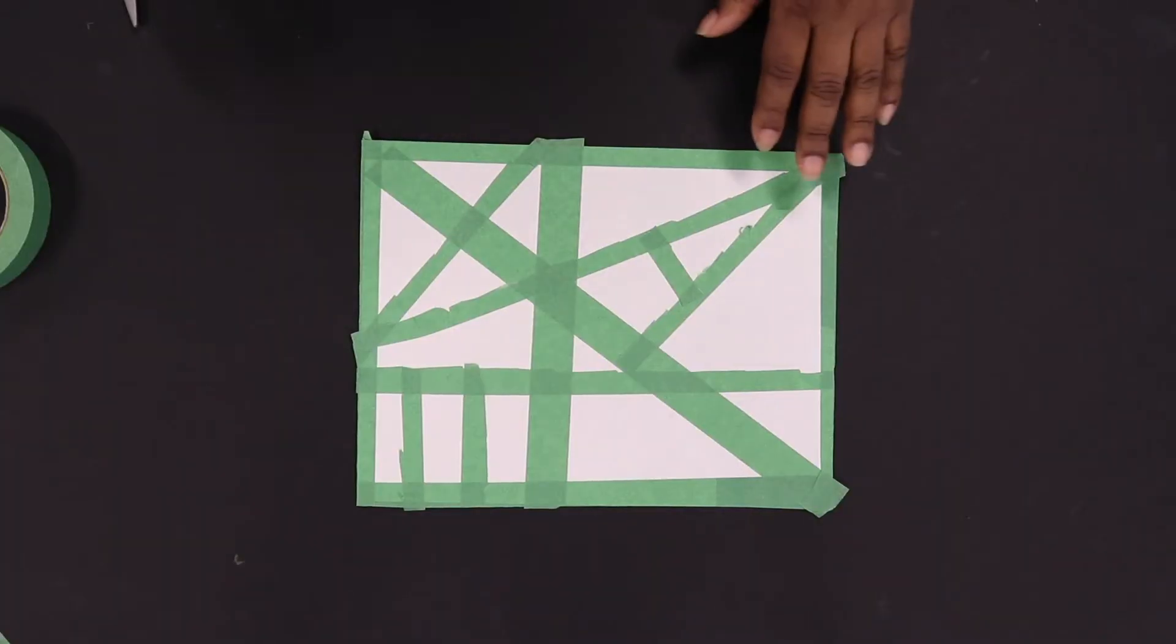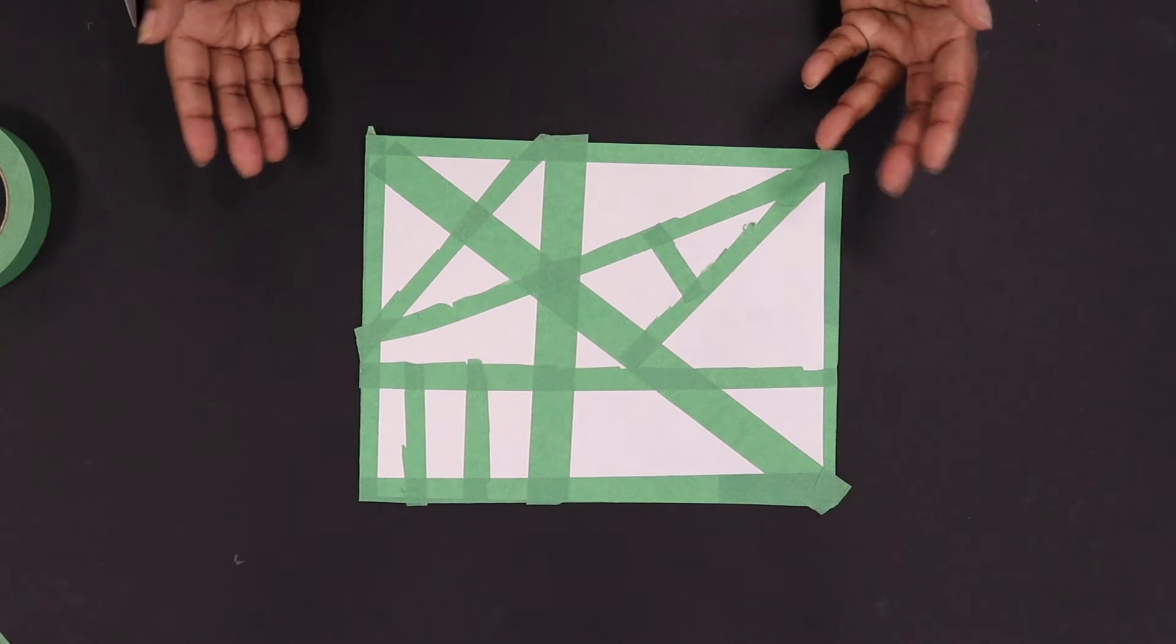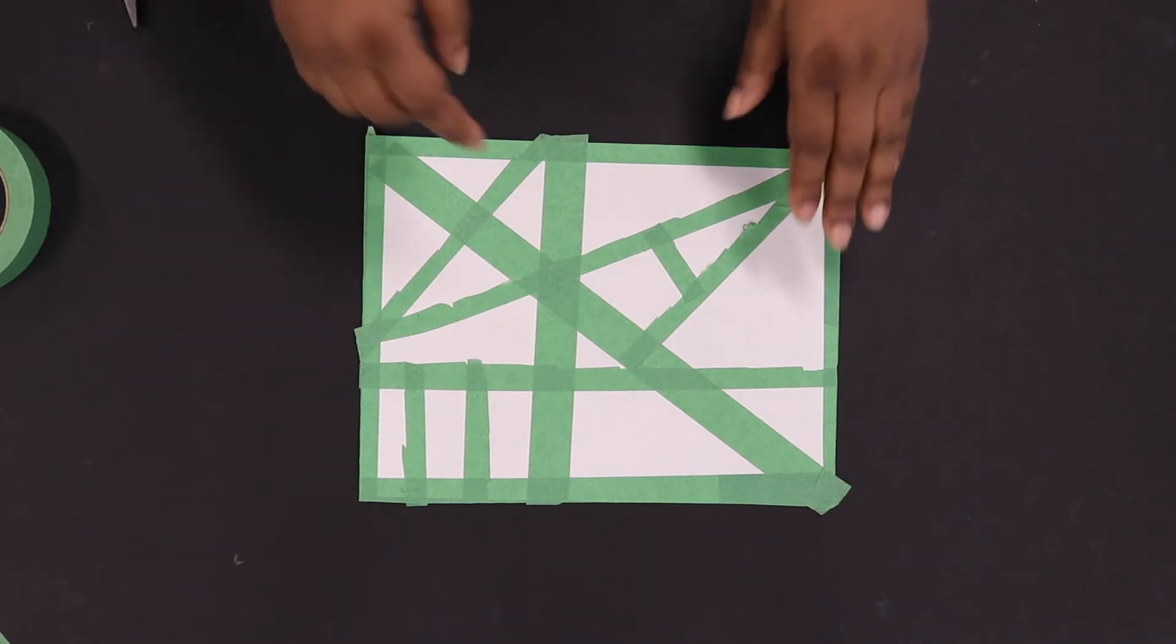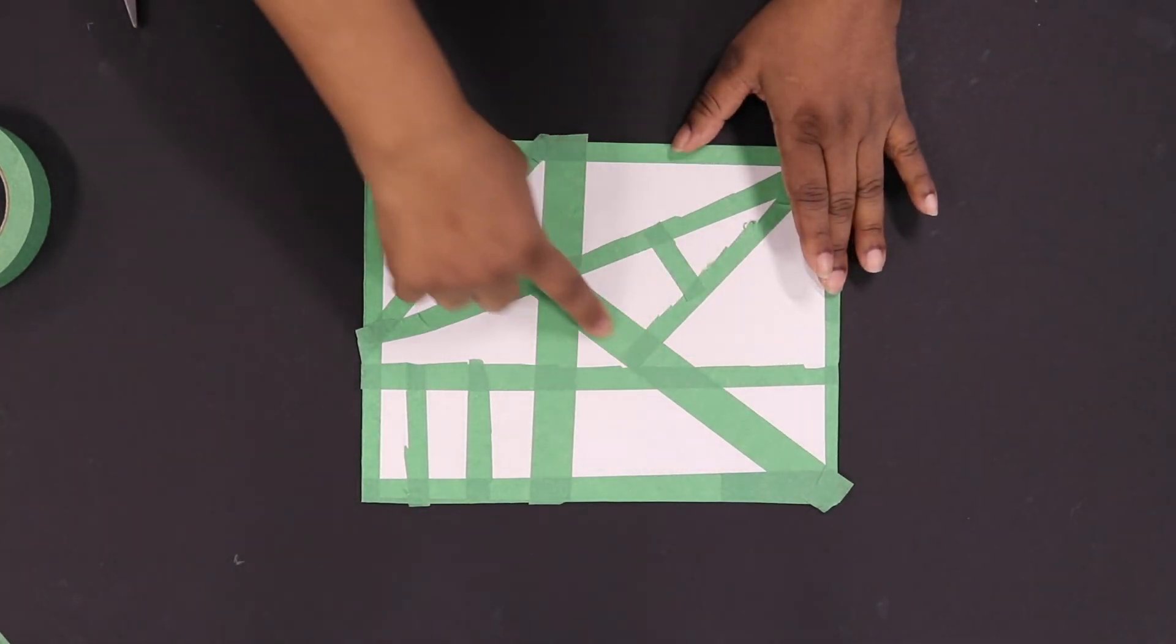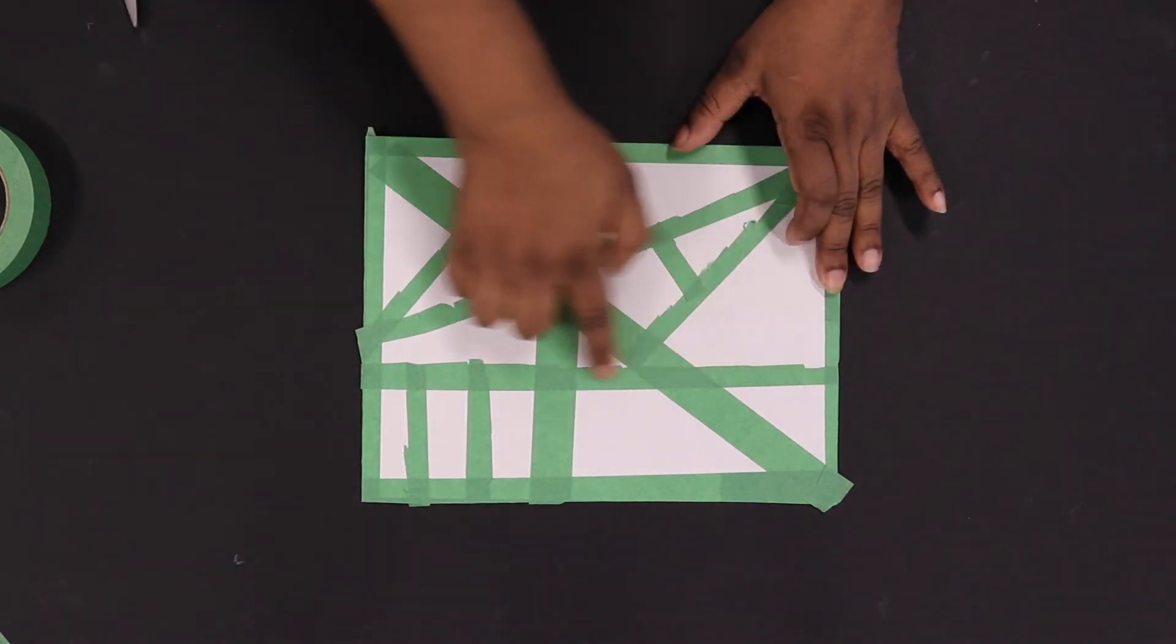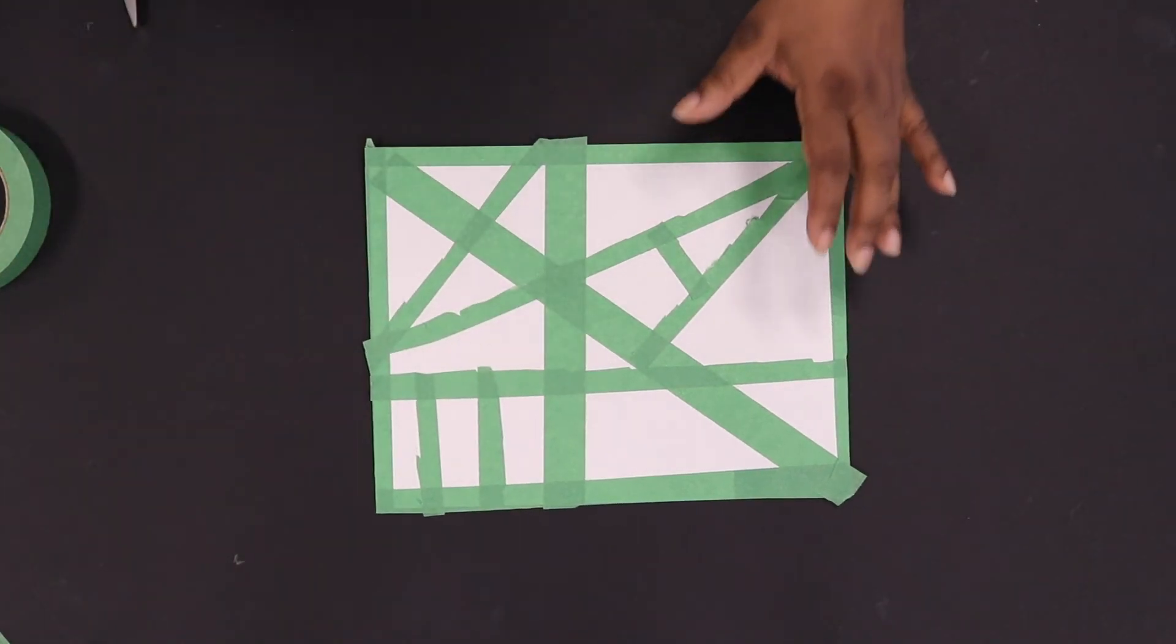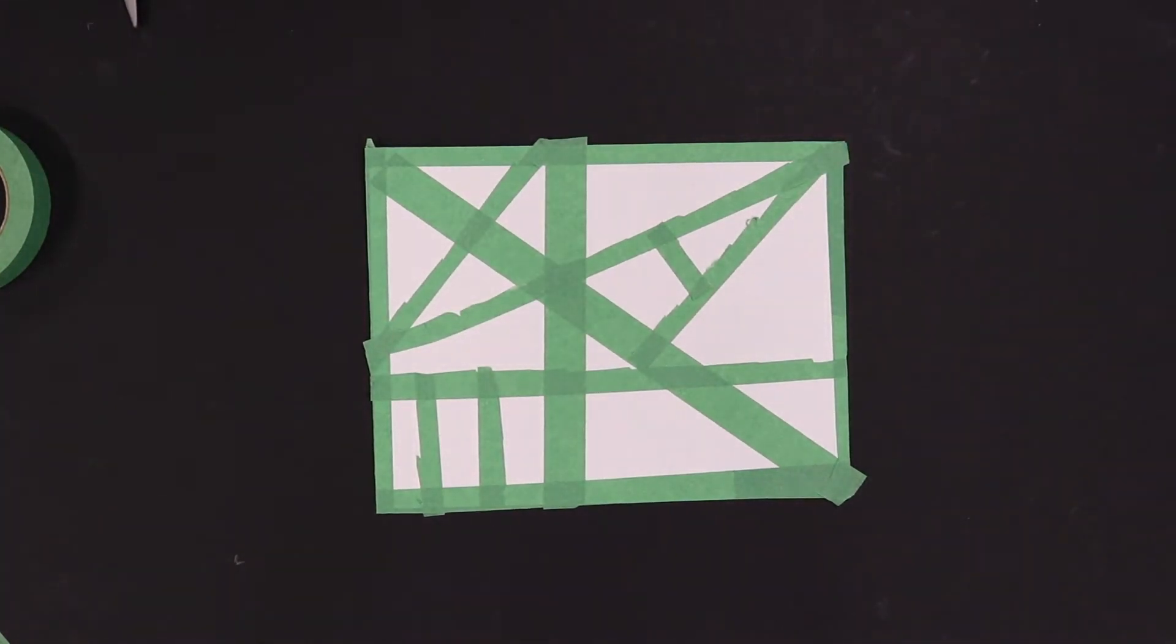And now we can begin putting our lines all over the place. Now that we've added our lines on our papers, we can see that I have a long line, and skinny lines, and short lines. You can make your lines however you would like on your paper.